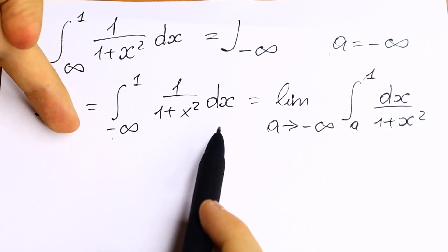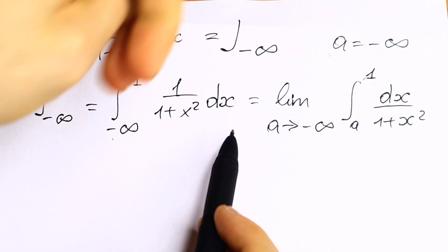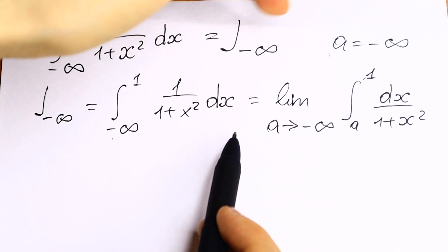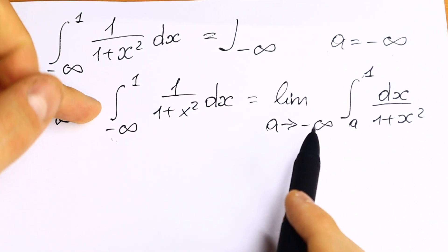So we need to change the measure. We need to put a variable, a for example, doesn't matter. A equals minus infinity, and we need to put a limit.